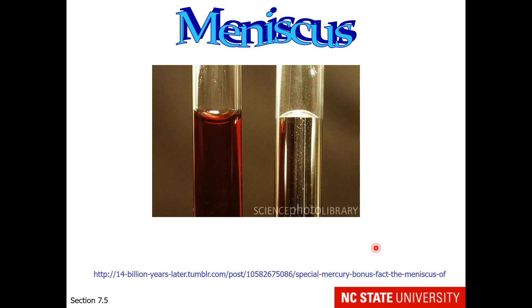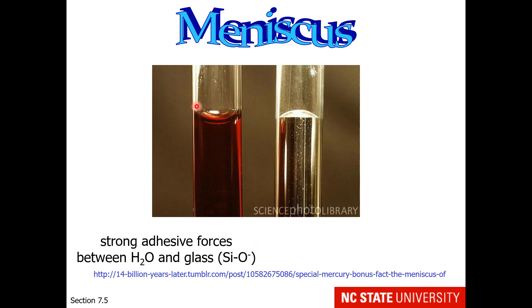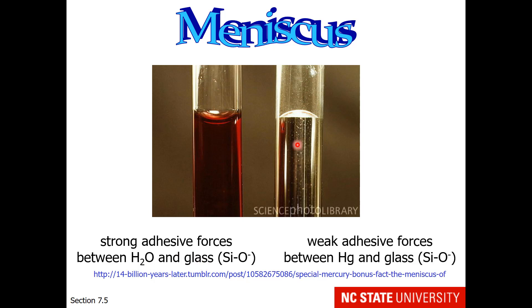Meniscuses come in two forms: those that curve downward and those that curve upward. I have two glass cylinders here — one has water with dye in it, the other has mercury. You notice the meniscuses are different. The downward curving meniscus is due to strong adhesive forces between the water, which is a very polar molecule, and the glass, which has a highly charged surface — the water molecules and the glass are attractive to one another. Mercury and glass however have weak adhesive forces; mercury is very nonpolar and noncharged, while the glass is highly charged, resulting in an upward curving meniscus.